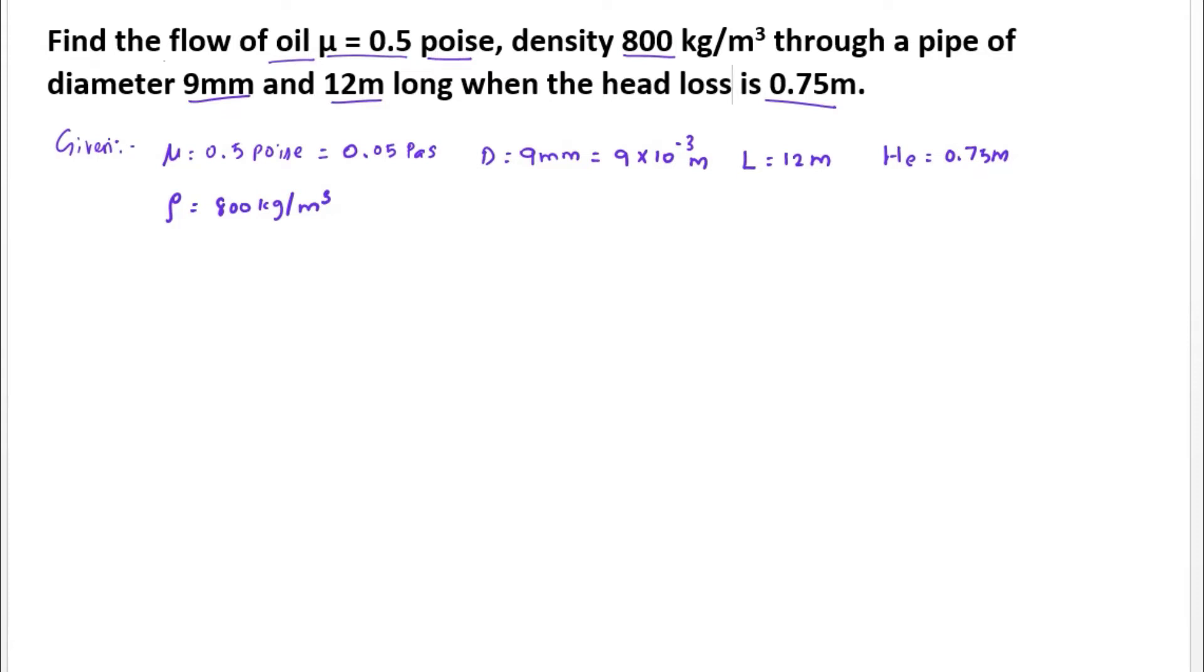We have to find the flow velocity. First we find the Reynolds number: R equals rho into V into D divided by mu. Substituting values, R equals 800 into V into 9 into 10 power minus 3 divided by 0.05. Solving this we get R equal to 144 into V.